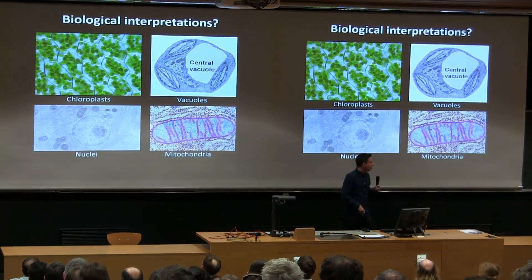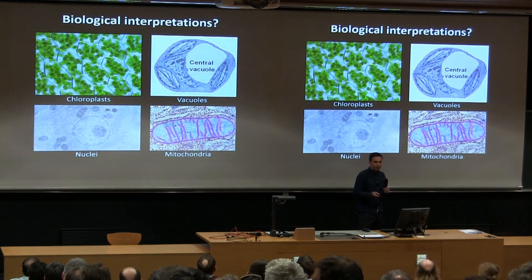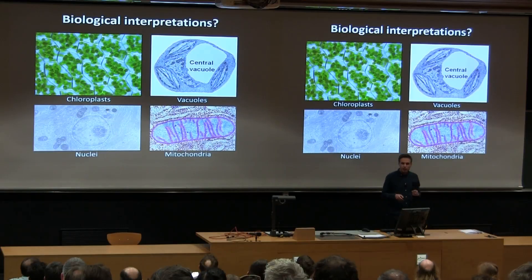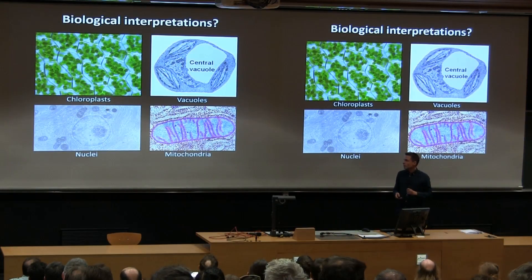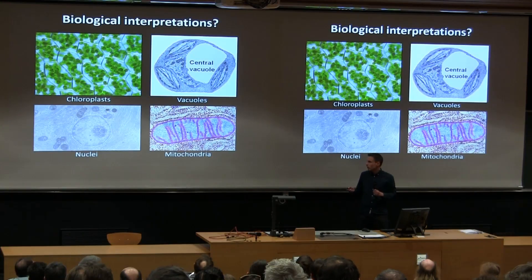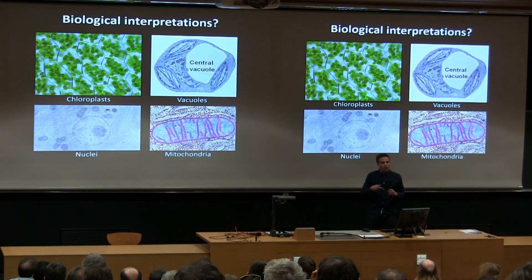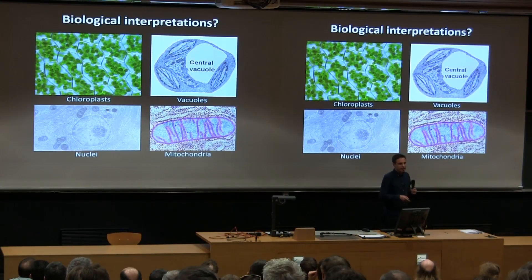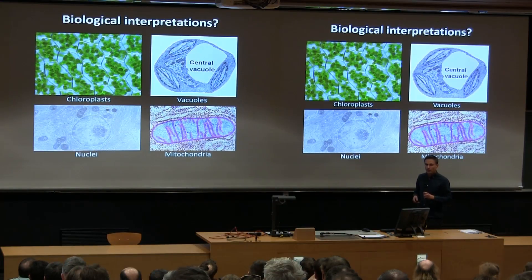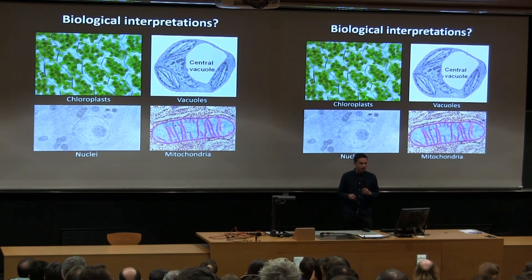We also considered various biological interpretations — various structures within cells — but none of these apart from the nucleus model can account for the number, the position, the consistency, and the evidence for division in coordination with the cells which contain them.